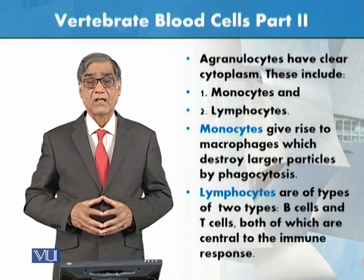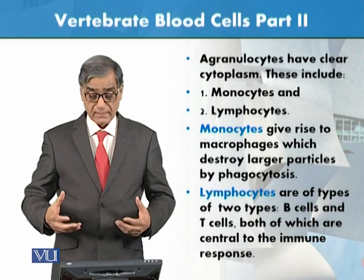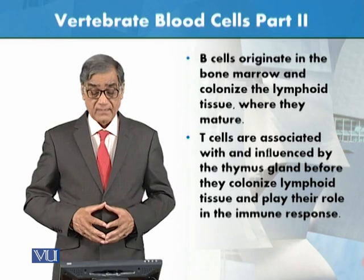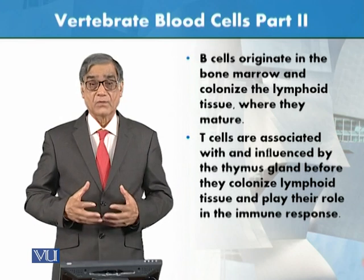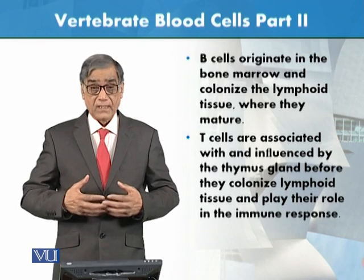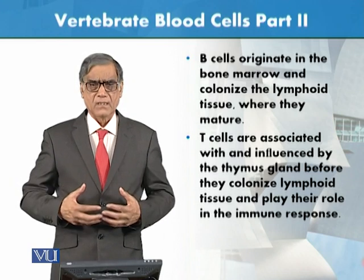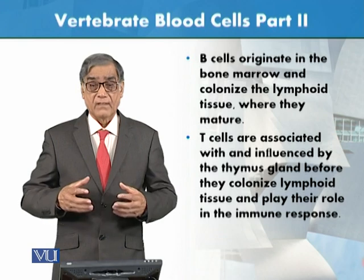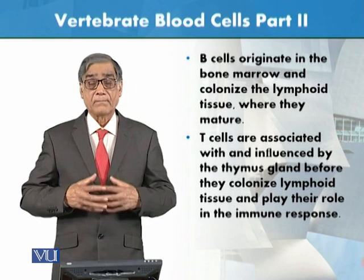The immune system relies on lymphocytes, specifically B cells and T cells. B cells originate in the bone marrow — that is why they are called B cells — and they colonize lymphoid tissue where they mature. Lymphoid tissue includes the thymus, appendix, and many other organs.